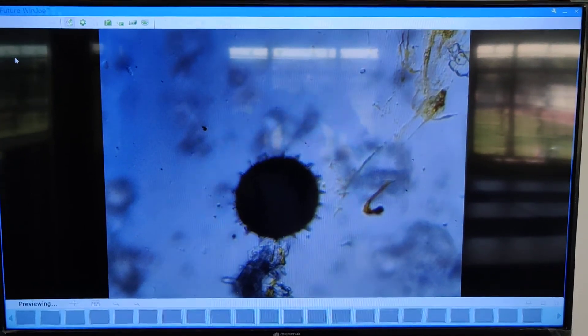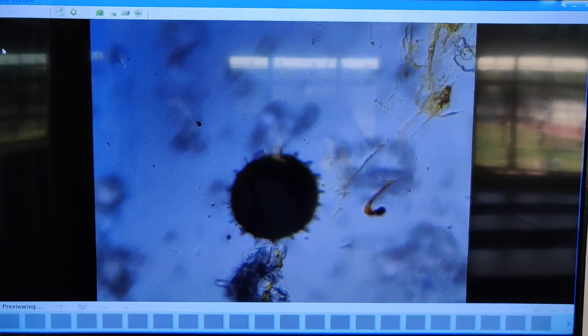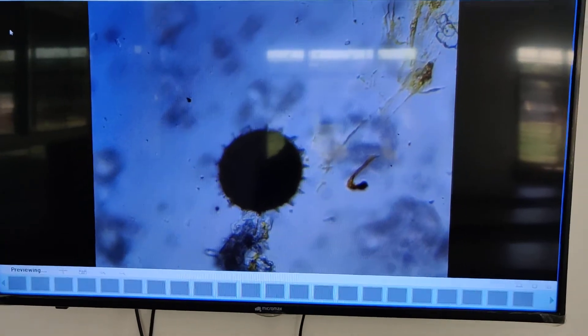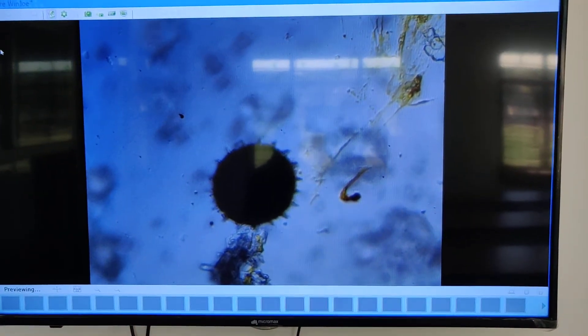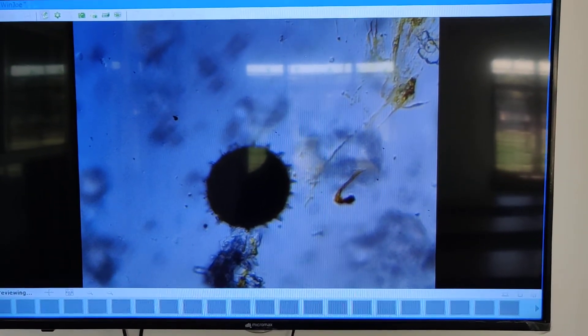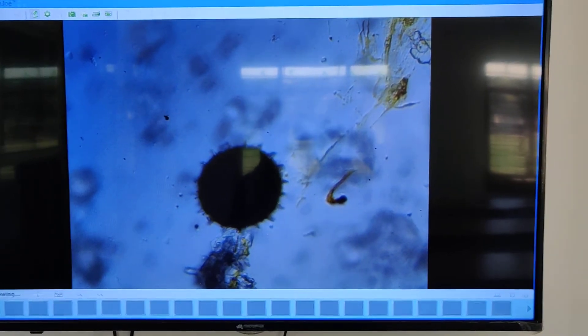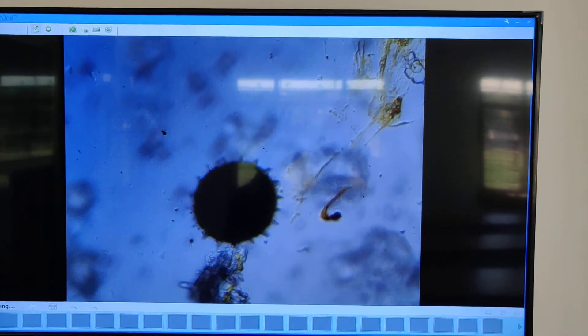So 5 minutes are over and now you can see the pollen grain under microscope on this screen. You can see in this pollen grain as well as in other pollen grains there is no germination. The exine is still intact. I will see it again after 5 minutes.